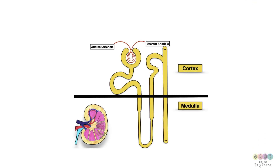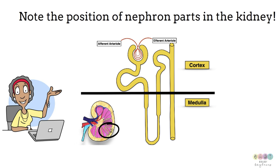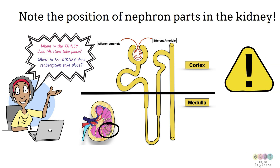When you know the structure of the nephron, it's important to note the position of nephron parts within the kidney — are they in the cortex or in the medulla? This matters because Leaving Cert questions often ask where in the kidney filtration takes place, or where reabsorption takes place. So this diagram is very important before moving on to urine formation.